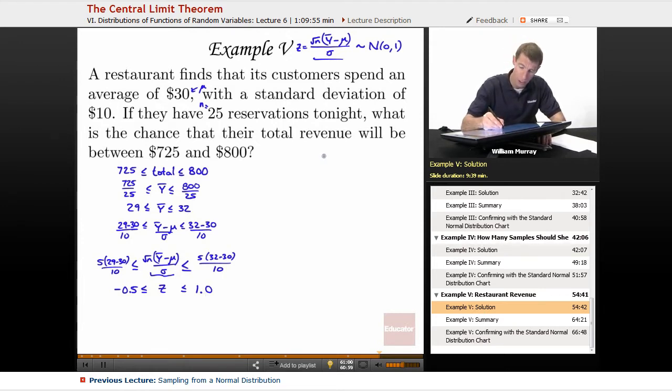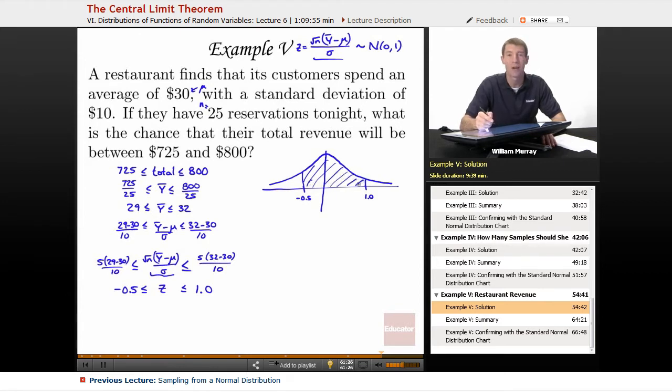And so, now I have a standard normal variable, and I want to find the probability that it's between negative 1 half and positive 1. Let me draw that graph of what I'm looking for. Possibly, if you have the right electronic tool, you can jump to the answer at this point. Just drop these numbers in your electronic tool. But let me show you how you can figure out using our charts. So there's negative 0.5, and there's 1, 1.0, and I want to find the probability of being in between those two.